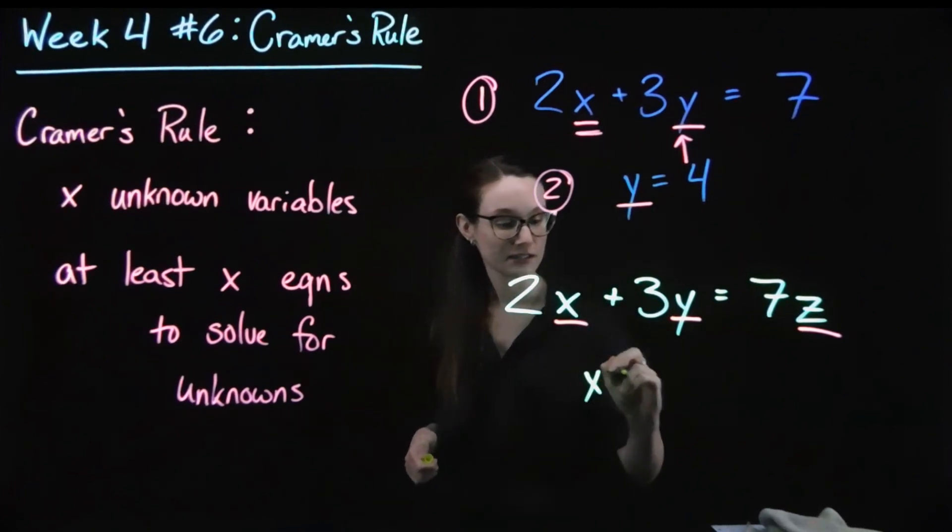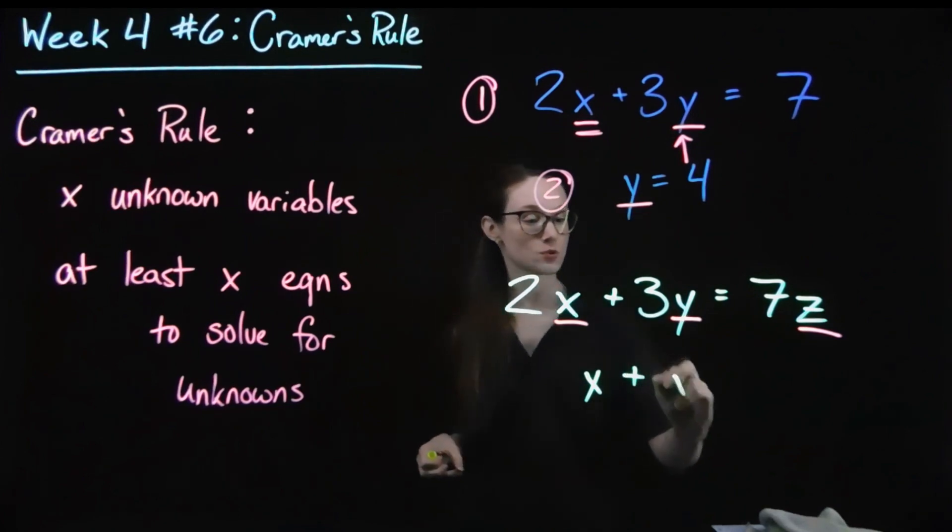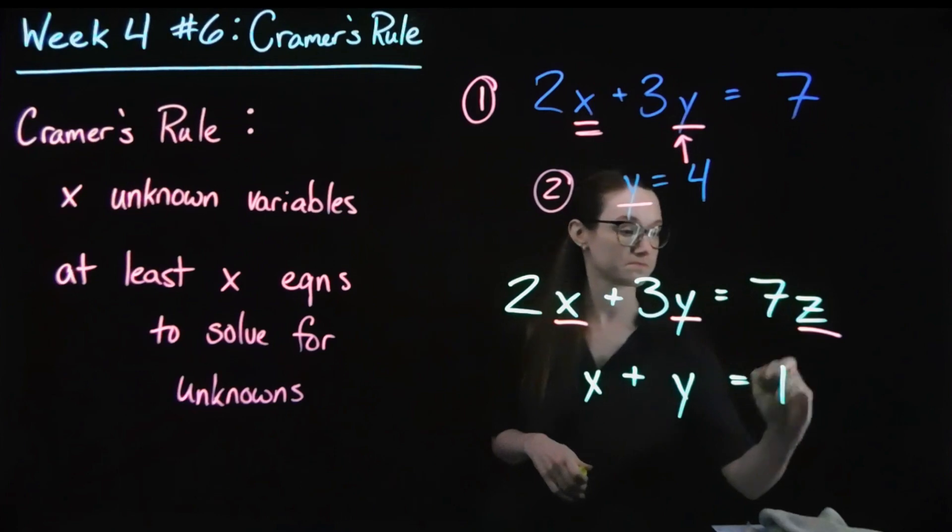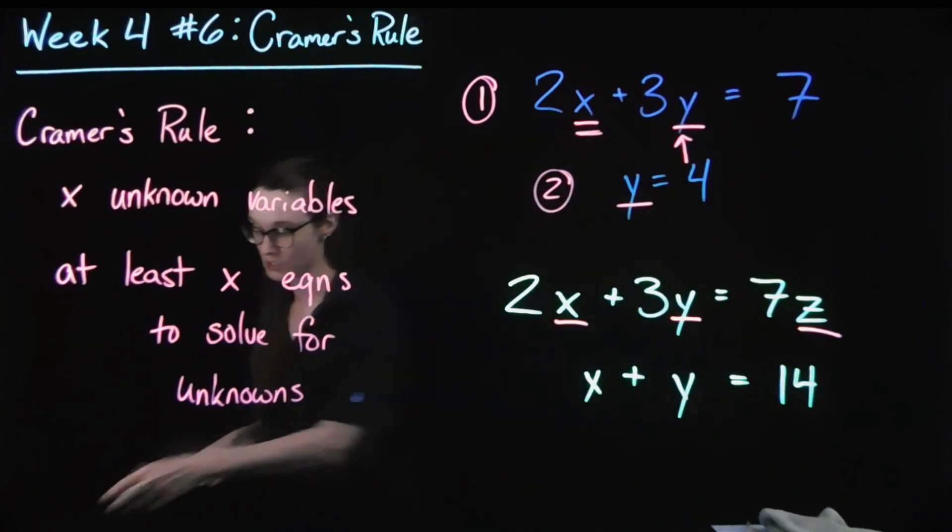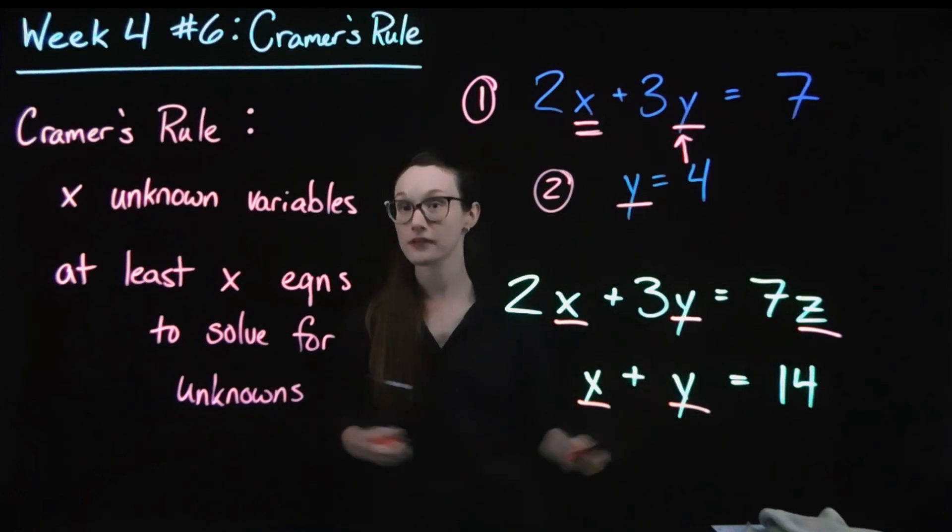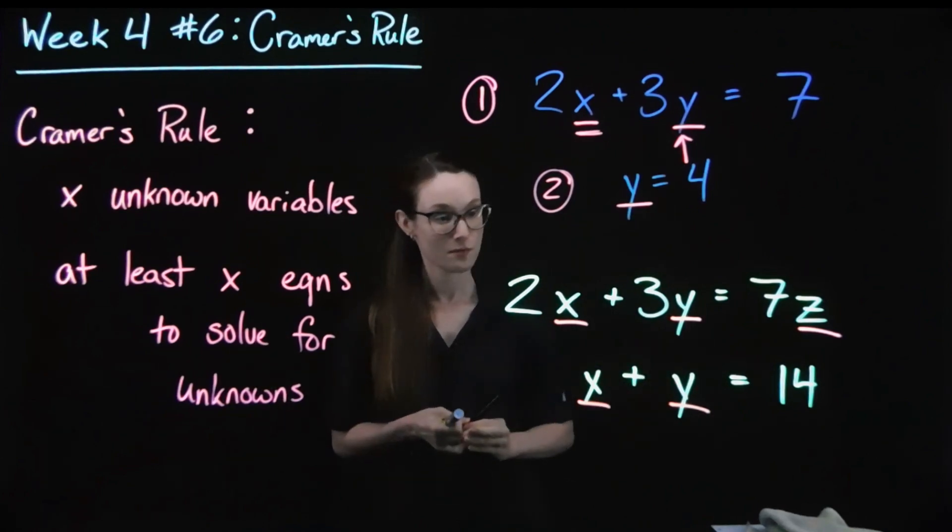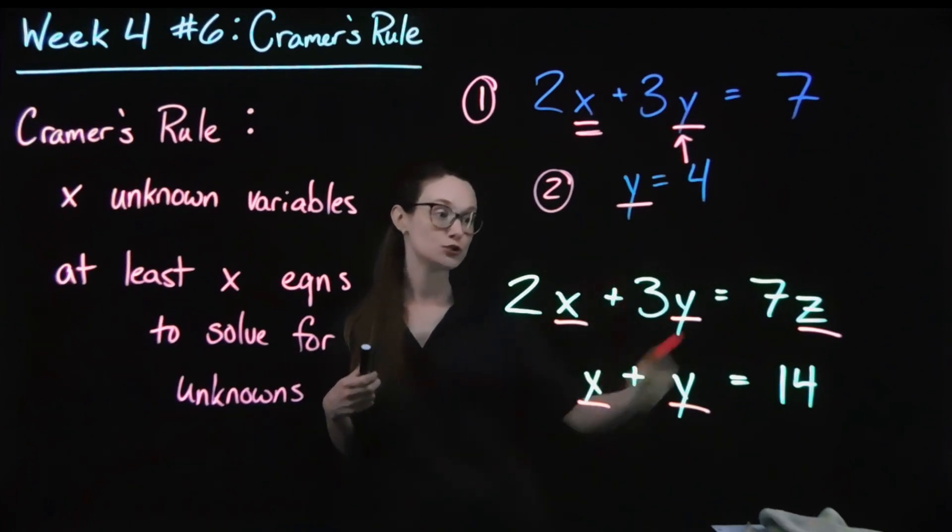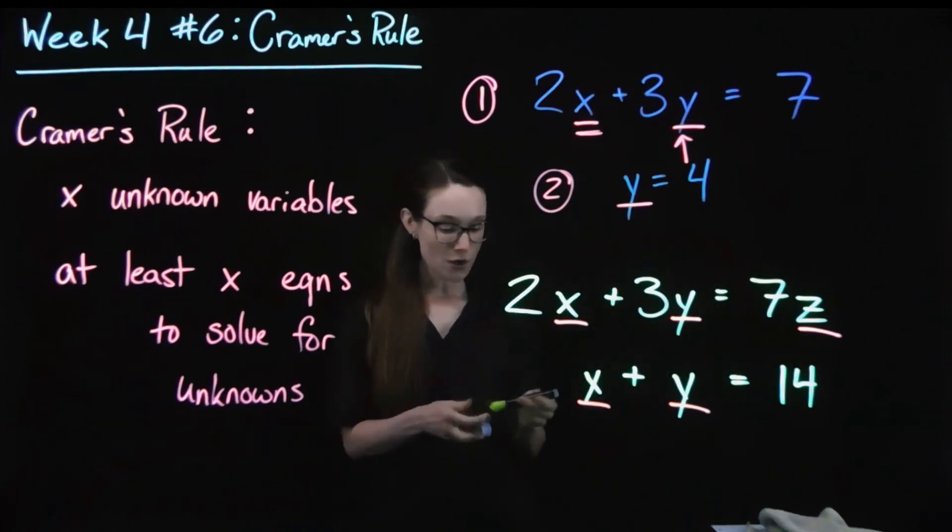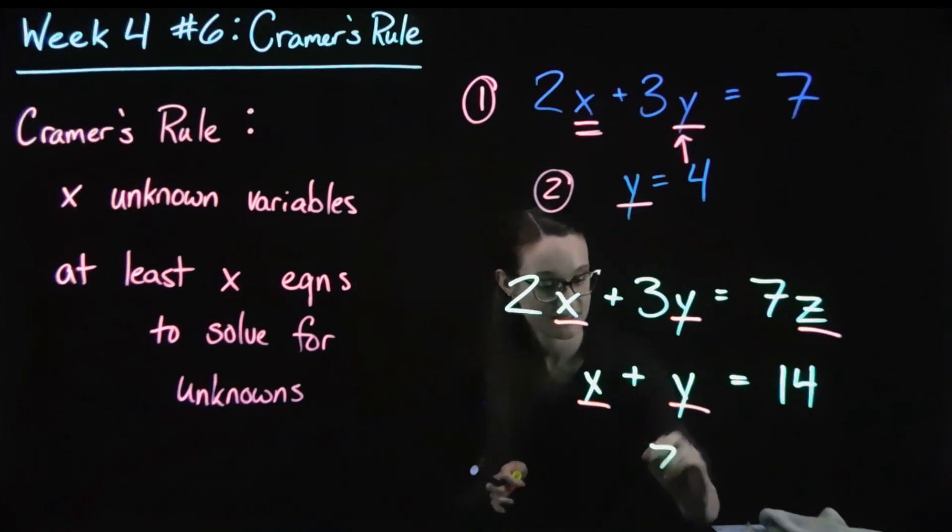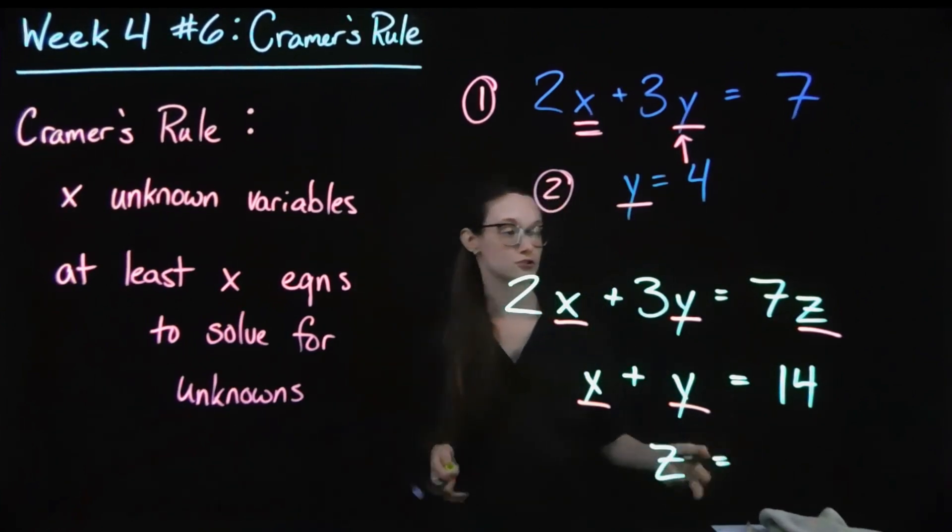If I have one additional equation, I might have something like X plus Y equals 14. So now my X and Y, I could pick whatever method I want to use, but ultimately, I'm still going to end up with at least two variables there. So if I have a third equation, maybe Z equals 2.